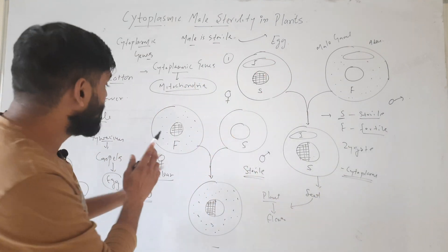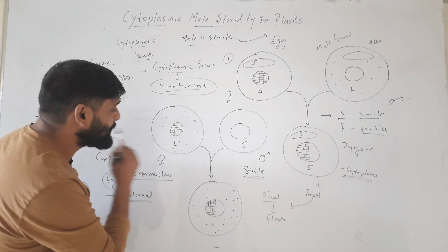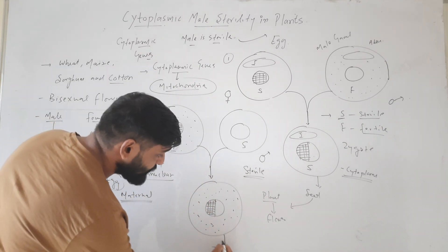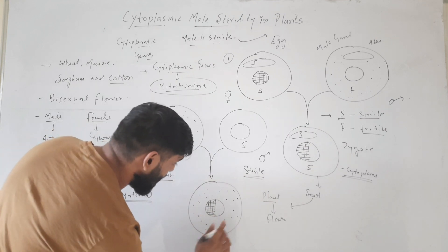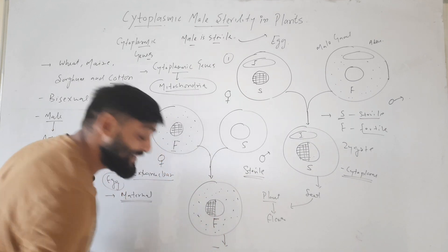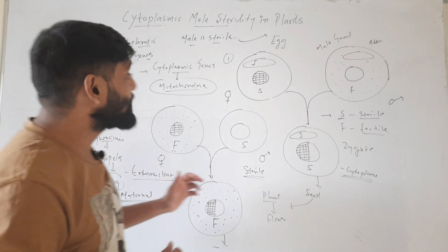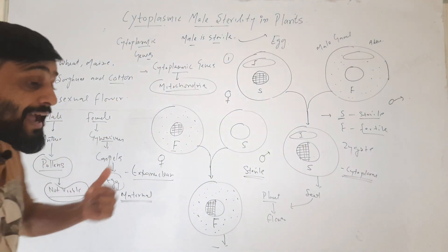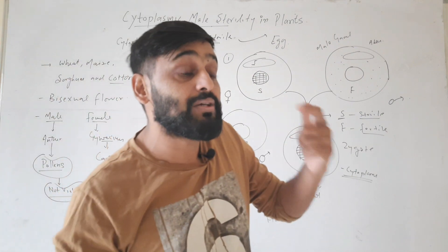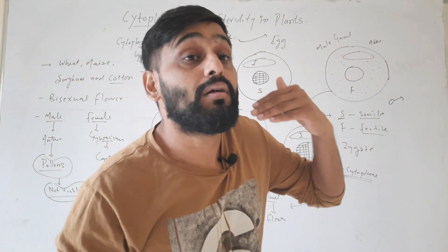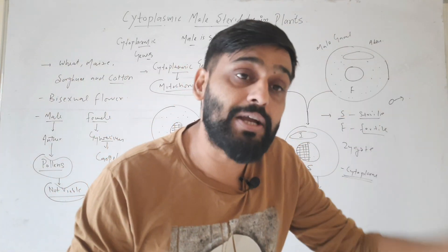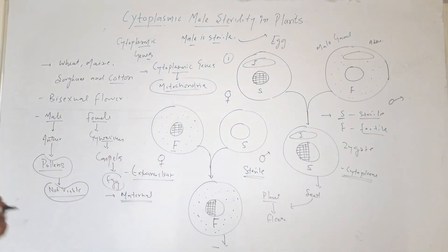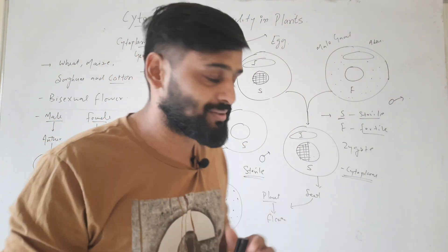When the reverse is the condition — when cytoplasm is fertile type in the mother and fertile type in the father — then there will be F-type cytoplasm in this zygote. So this shows that the inheritance of cytoplasmic male sterility is extranuclear, means genes are present inside the cytoplasm, in the mitochondria. This shows maternal inheritance. So this is cytoplasmic male sterility in plants.